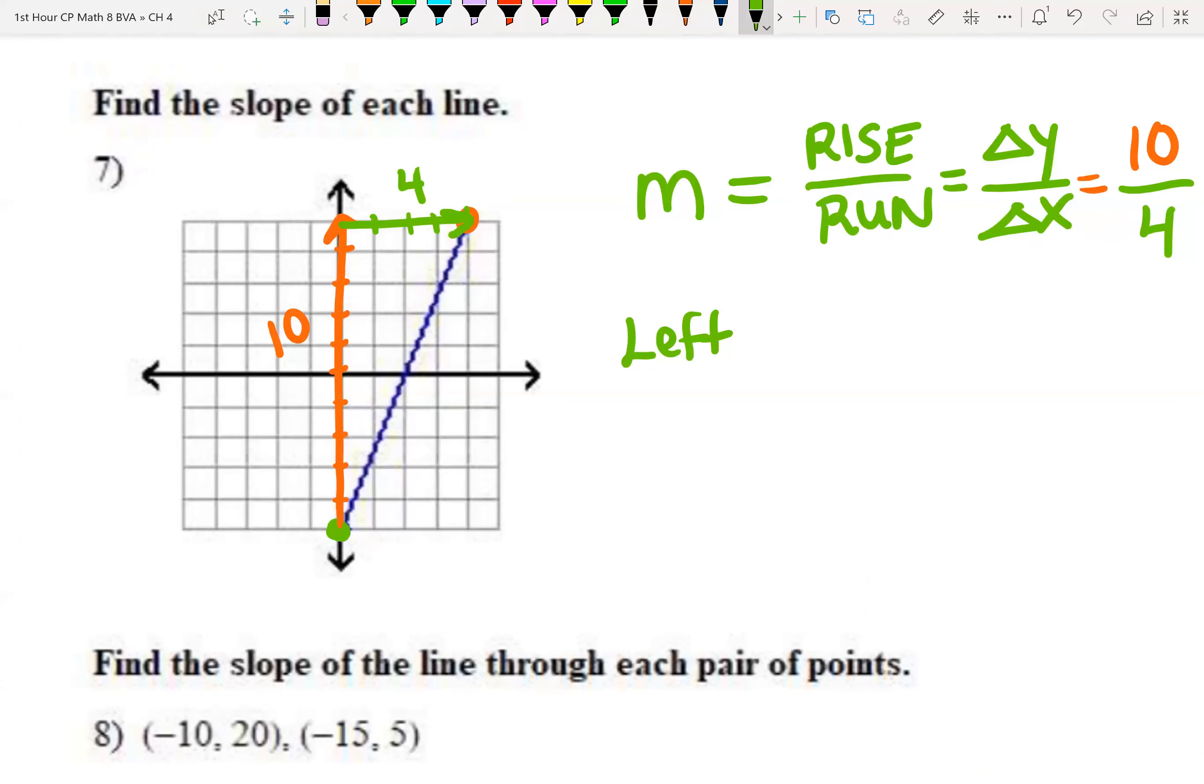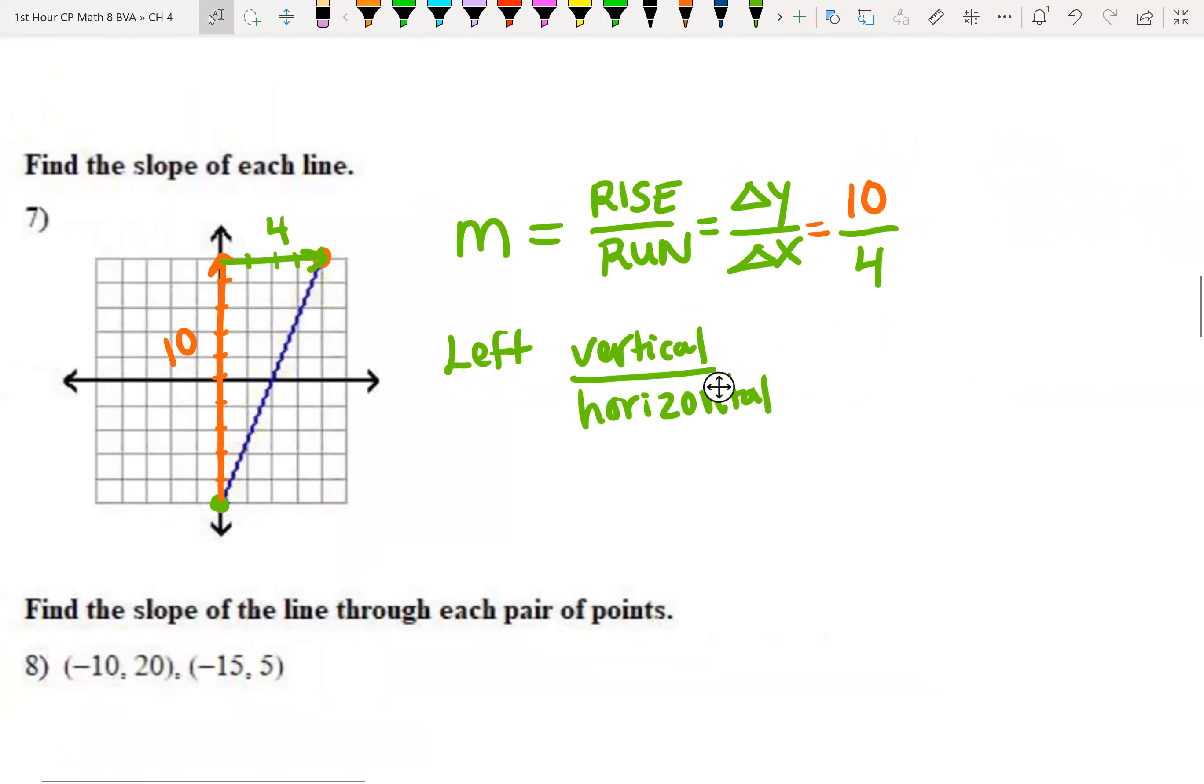So starting with the point on the left, we measure the vertical change divided by the horizontal change, another name for slope. Look at all those nicknames. So now we can take that 10 over four, and we can reduce that to just five halves, and that's your final answer for number seven. This is the work we expect to see as teachers for you to show us you understand how to find slope on a graph. Show us your rise and your run, or sometimes you have to go down and to the right.